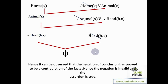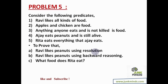Look at the variation — a lot of times you have to think a lot in step one and step three, depending on the nature of the problem. This is how you keep solving resolution questions. Now this is the last complete problem we'll be solving on predicate logic before moving to propositional logic. Consider the following predicates: Ravi likes all kinds of food; apples and chicken are food; anything anyone eats and is not killed is food; Ajay eats peanuts and is still alive; Rita eats everything that Ajay eats.